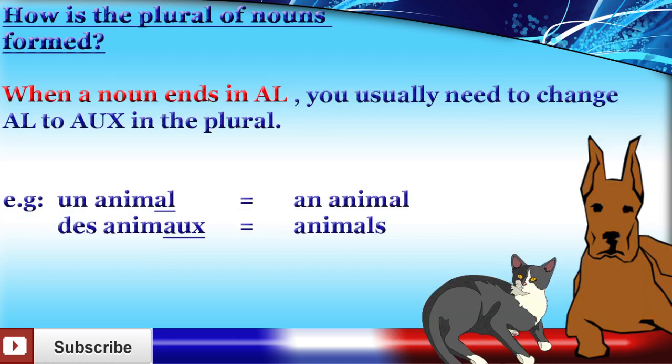When a noun ends in AL, you usually need to change AL to AUX in the plural. For example, un animal, an animal, des animaux, animals.